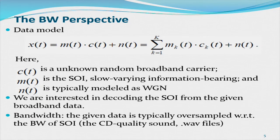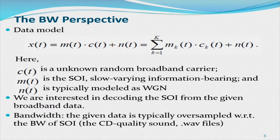From a bandwidth perspective, the data model looks like XT — the recorded data provided to us — and it can be formulated in terms of two terms. The first term contains the signal of interest: the message MT, and CT is the so-called random broadband carrier. NT is additive noise. We're only interested in recovering MT. Unfortunately, CT is not known; it depends on the real system. Sometimes you have multi-component, so the first term can be expanded into a multi-component formulation.